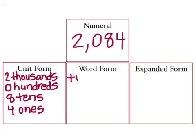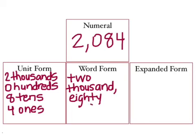For word form, we're going to write everything in words. Two thousand—I can put a comma here like it shows in the numeral—eighty-four.